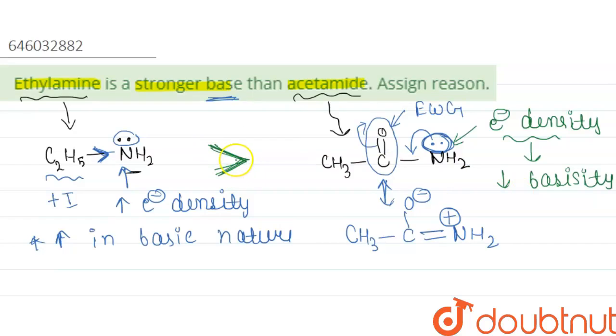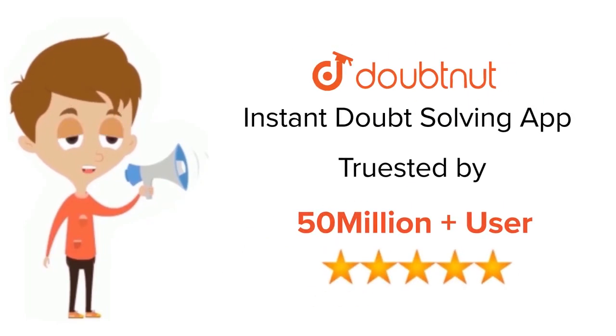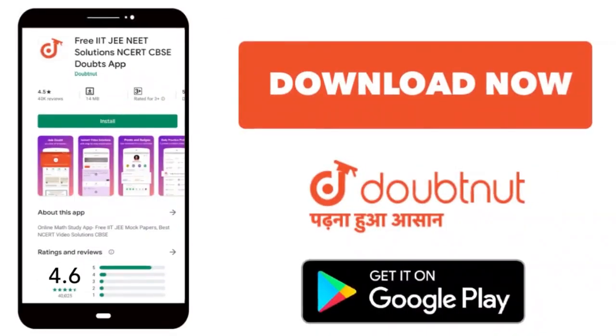So this is how we can easily explain why your ethylamine is stronger base than acetamide. It is due to presence of plus I effect. So hope you get your correct answer. Thank you, bye-bye. For class 6 to 12, IIT-JEE and NEET level, trusted by more than 5 crore students, download DoubtNet app today.